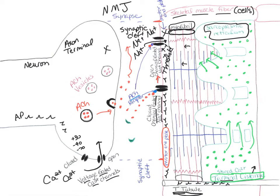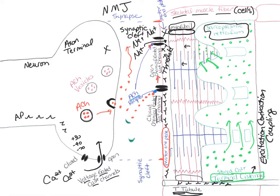What we just explained is the process called excitation-contraction coupling. The excitation portion was the action potentials traveling down. The contraction portion is that calcium will be released from the sarcoplasmic reticulum, and then the calcium molecules are going to bind to the troponin on the actin molecules. That is excitation-contraction coupling — the action potential, the release of calcium, and the binding of calcium to troponin.